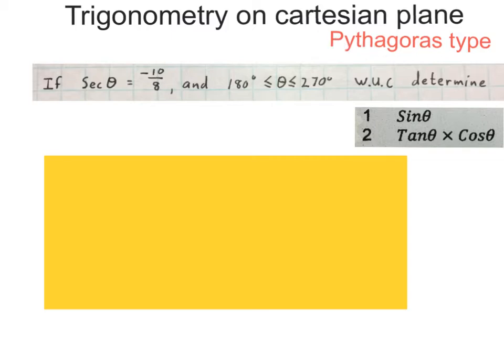The question says if sec theta is minus 10 over 8 and this theta lies between 180 and 270 without using a calculator, determine sine theta and then tan theta times cos theta.